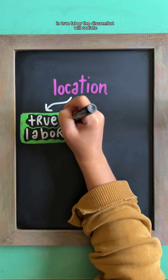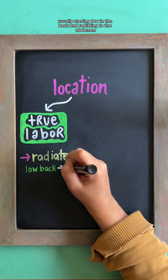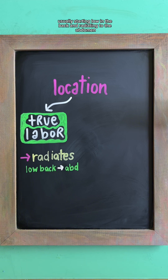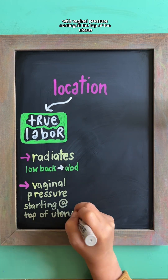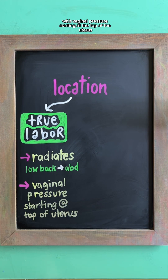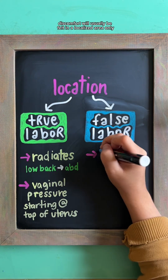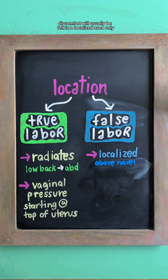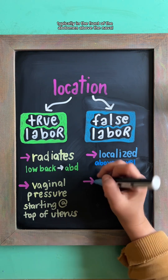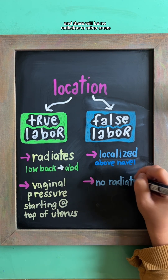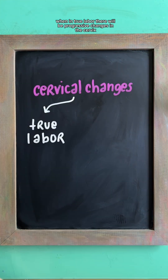In true labor, the discomfort will radiate, usually starting low in the back and radiating to the abdomen, with vaginal pressure starting at the top of the uterus. In false labor, discomfort will usually be felt in a localized area only, typically in the front of the abdomen above the navel, and there will be no radiation to other areas.